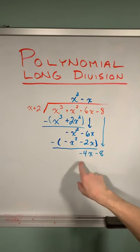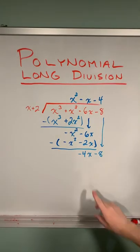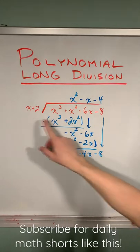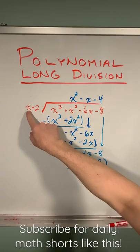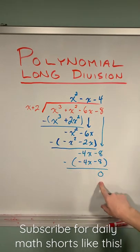And subtract straight down to get negative four x and bring that negative eight down and repeat the process to see that negative four x divided by x is negative four. Multiplying negative four by each of these will result in this and subtract to get a remainder of zero.